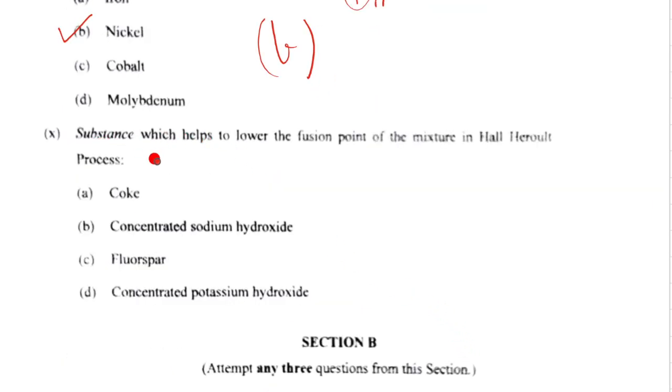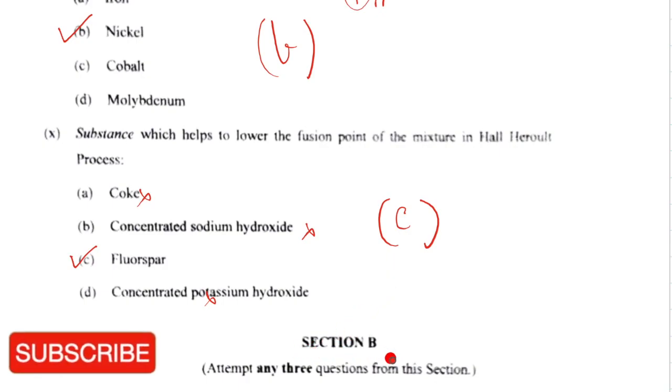Question 10: The substance which helps lower the fusion point in Hall-Heroult's process is fluorspar. Remember, apart from cryolite, we have fluorspar added. The correct option is C. I hope you've scored full marks. Check your marks and write them in the description. If you found this helpful, consider subscribing to my channel. Keep looking out for Section B's solution. Stay safe, stay healthy. Bye.